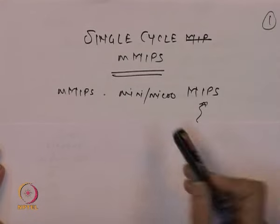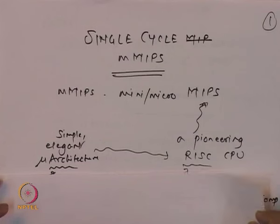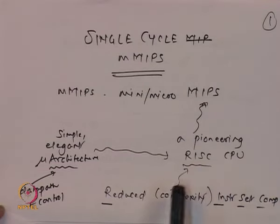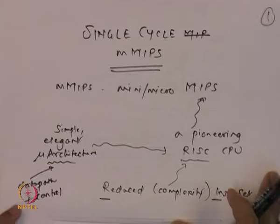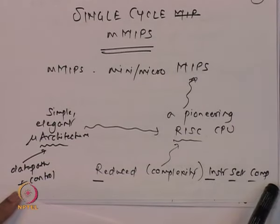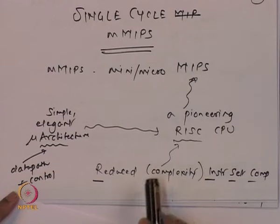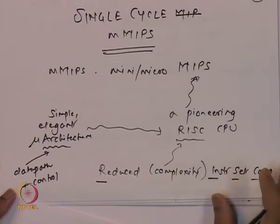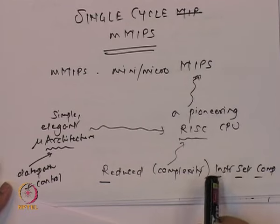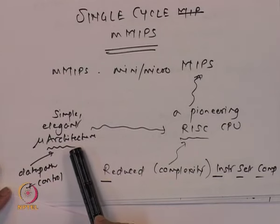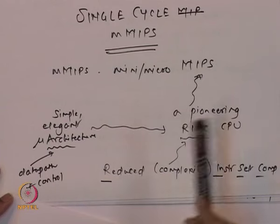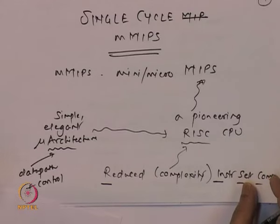Welcome again. In this lecture, I will introduce a toy version of a very popular pioneering CPU called MIPS. I am going to refer to this toy version as micro MIPS, with M probably standing for mini MIPS or micro MIPS. MIPS is a pioneering RISC CPU. RISC stands for Reduced Instruction Set Computer — the reduction is in the sense of complexity. The instructions are quite simple, and the simplicity of the instruction set leads to simple and elegant microarchitecture, which comprises the data path and a controller.